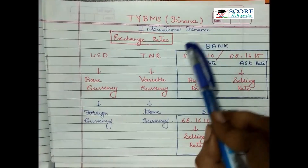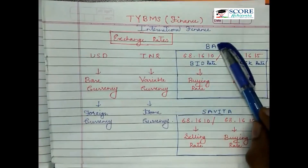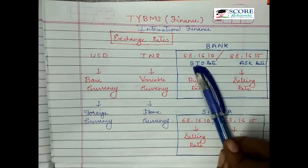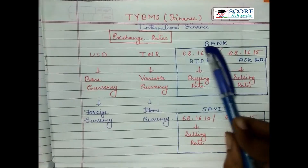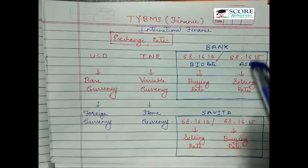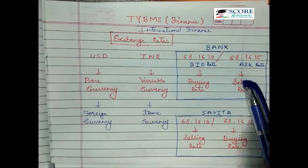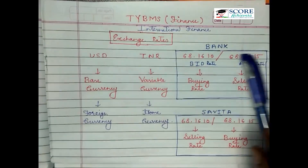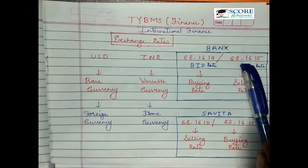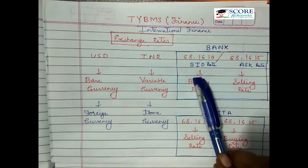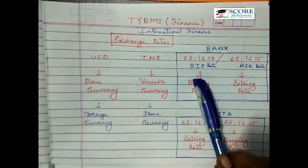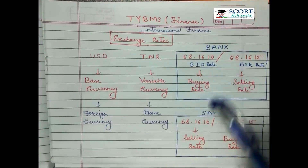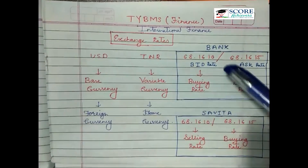Please remember that both the buying and selling rates are from the bank's point of view. If the bank wants to buy, 68.1610 is the applicable rate, and if the bank wants to sell, 68.1615 is the applicable rate. The bank always buys at the lower rate and sells at the higher rate, but for the individual it will be totally opposite.